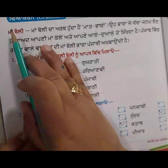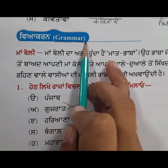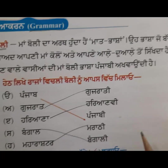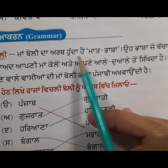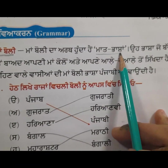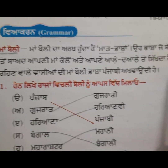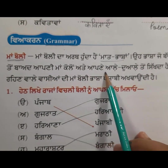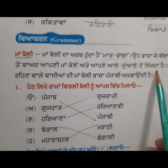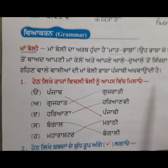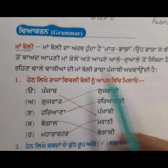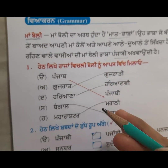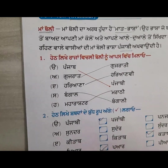Next is the grammar part. Maa boli — what does maa boli mean? Mother language. Maa boli da arth hunda hai maat bhaasha. It is the language a child learns after birth from his mother and surroundings. That is called maa boli. For those living in Punjab, their maa boli is Punjabi.